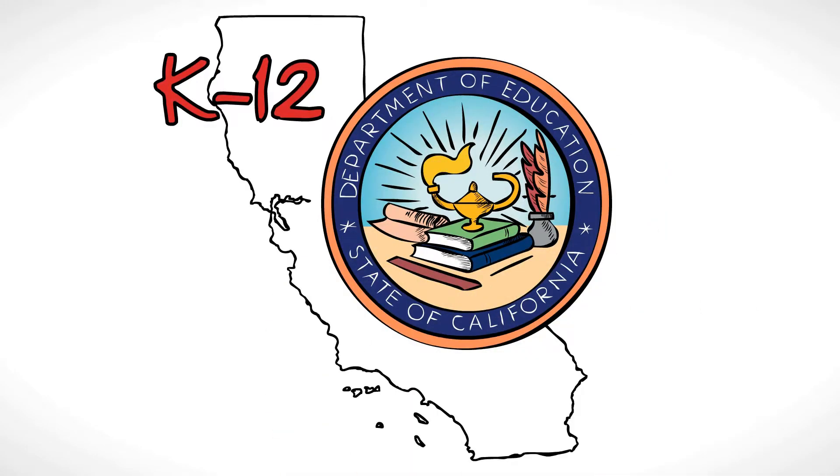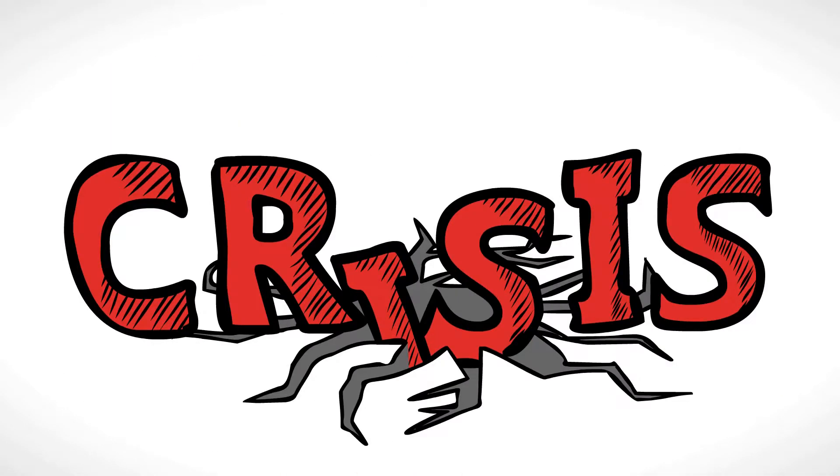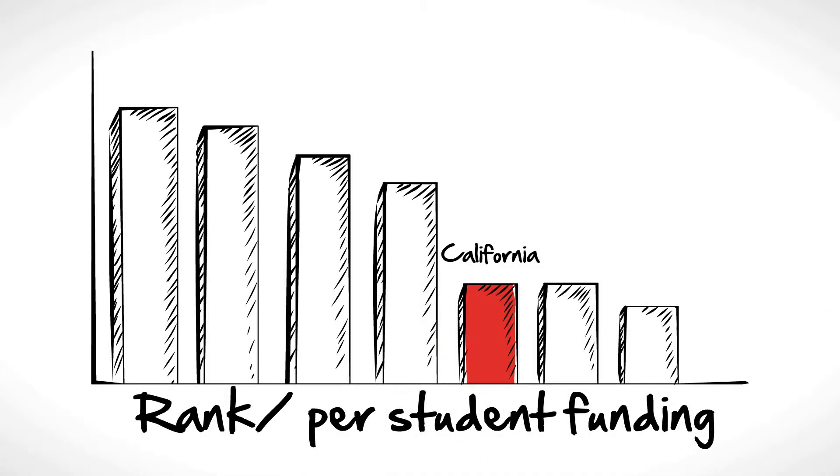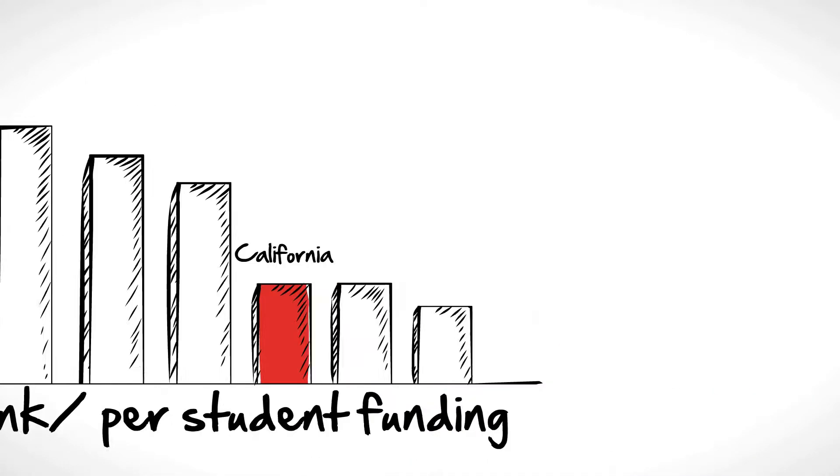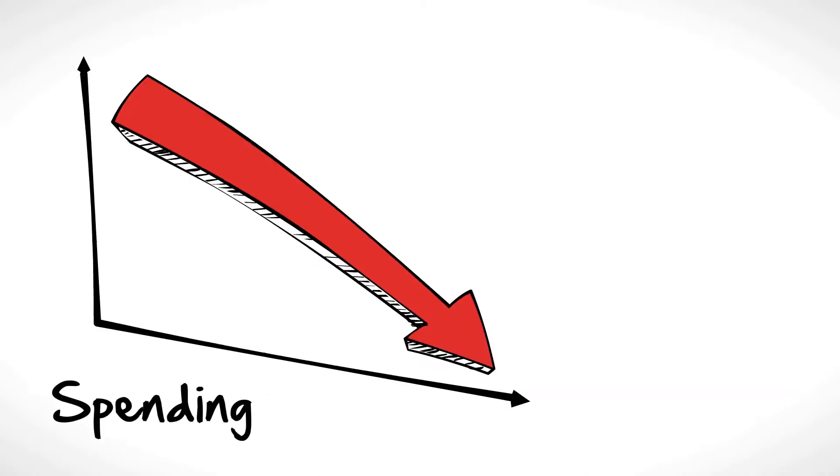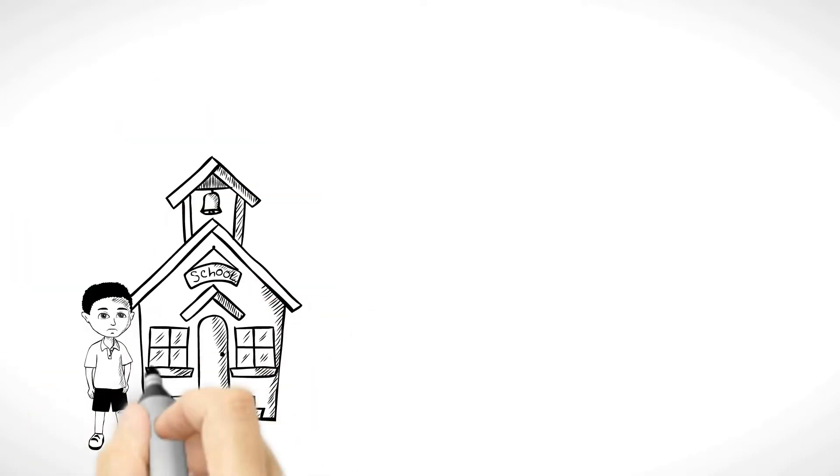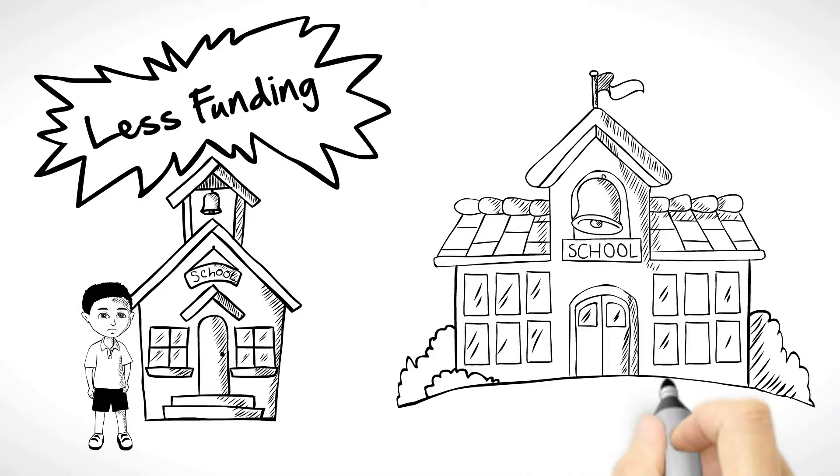K-12 education in California is in crisis. Not only does California rank near the bottom in per-student funding, and spending has been drastically cut, but students in low-income schools receive less funding than kids in well-to-do neighborhoods.